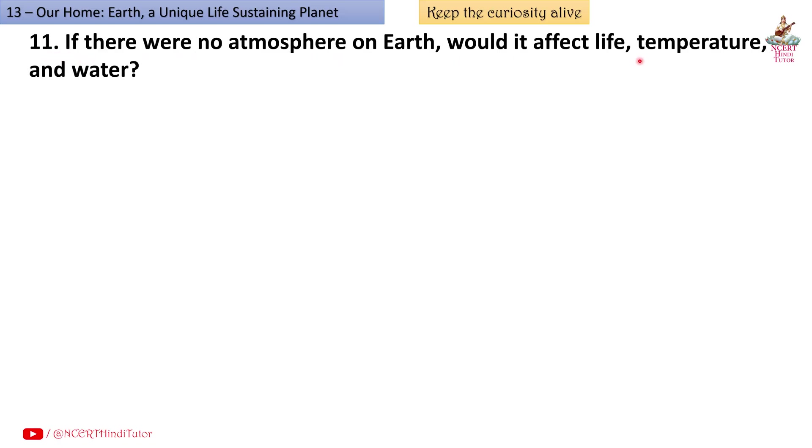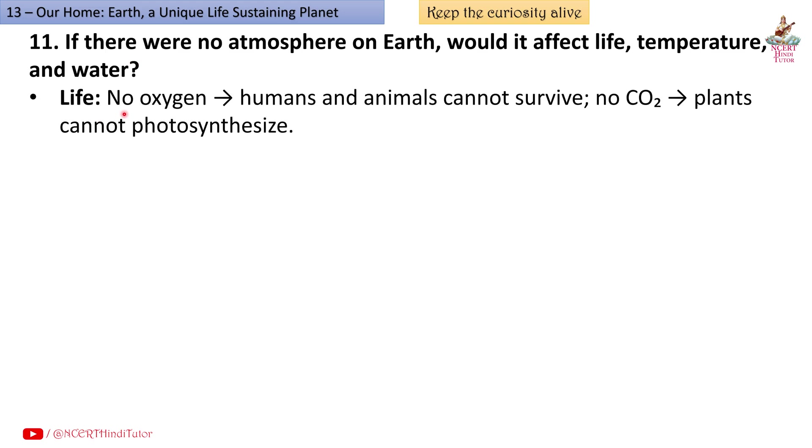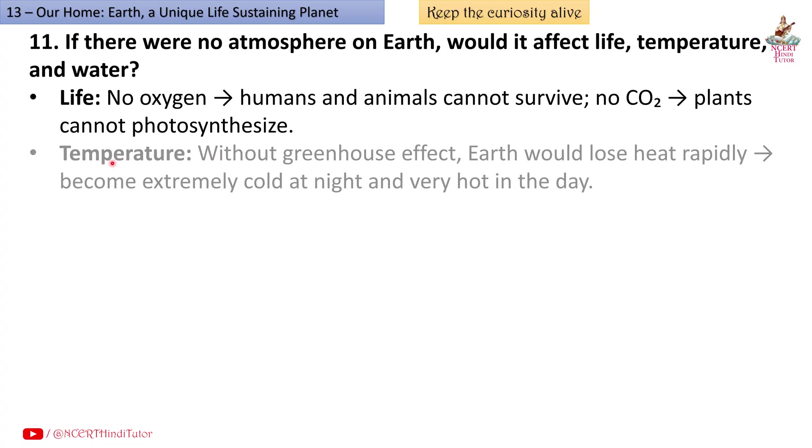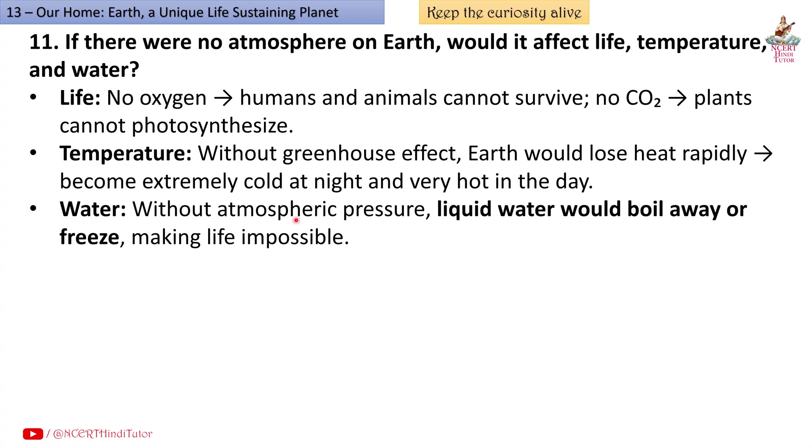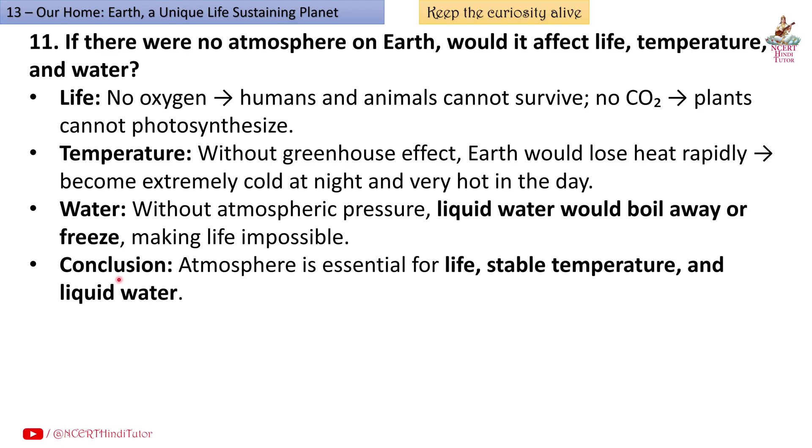Question 11: If there were no atmosphere on earth, would it affect life, temperature and water? Answer: Life - no oxygen means humans and animals cannot survive. No CO2 means plants cannot photosynthesize. Temperature - without greenhouse effect, earth would lose heat rapidly, become extremely cold at night and very hot in the day. Water - without atmospheric pressure, liquid water would boil away or freeze, making life impossible. Conclusion: Atmosphere is essential for life, stable temperature and liquid water.